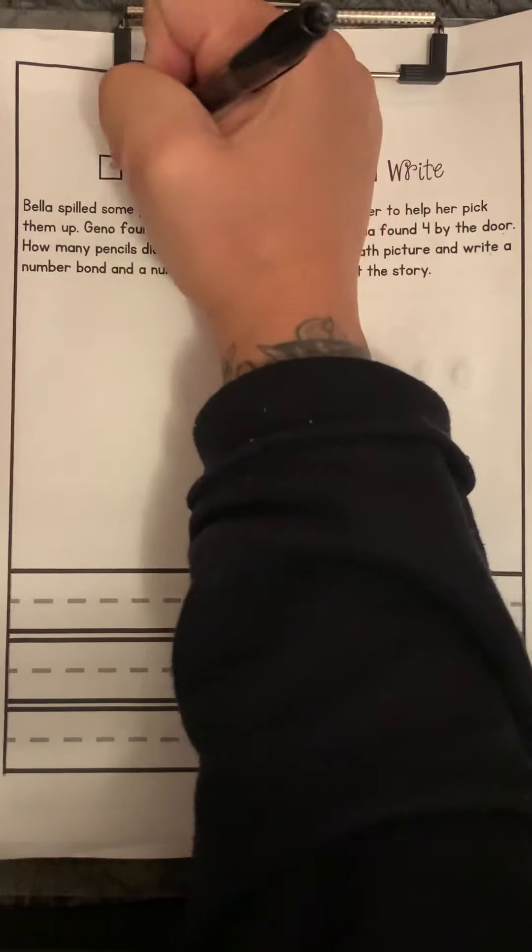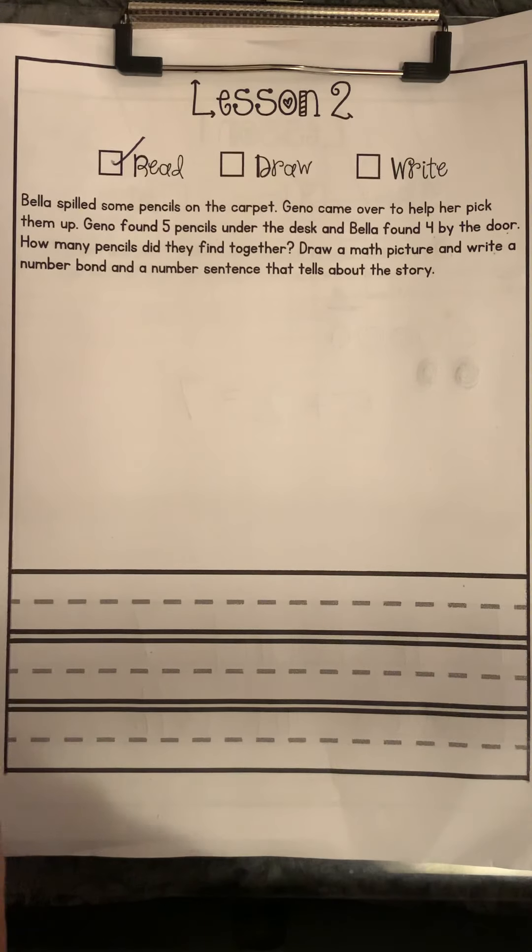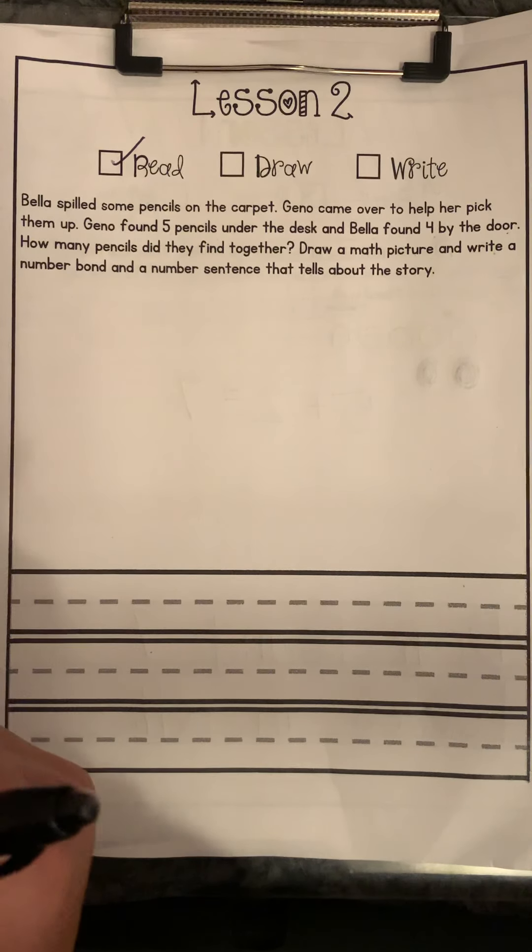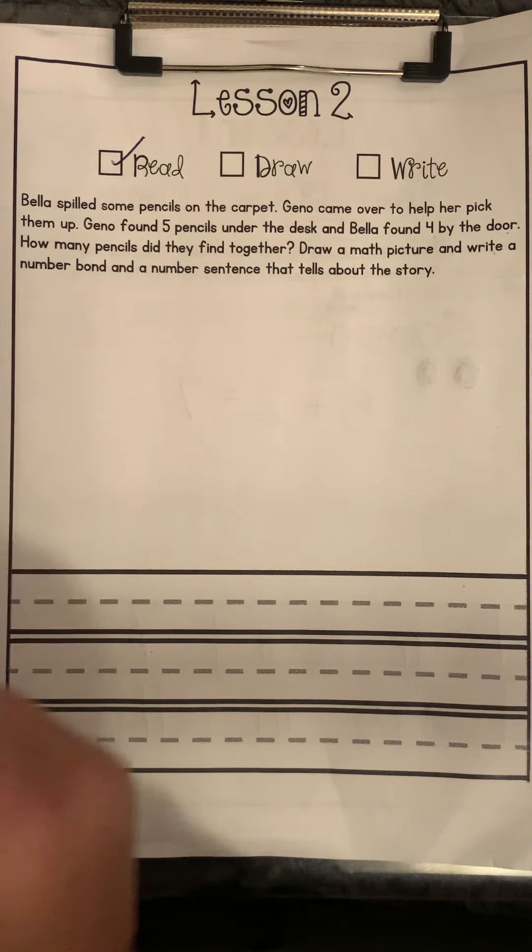We read through once, but I'm going to read through again, and this time I'm going to circle the numbers that we're going to use and underline any of our keywords that help me figure out if we're going to add or subtract for this problem.